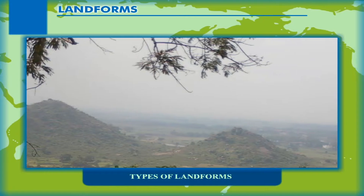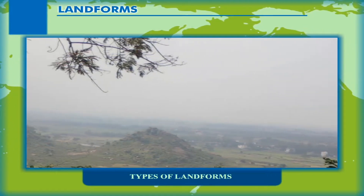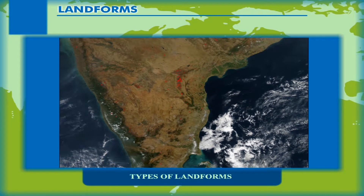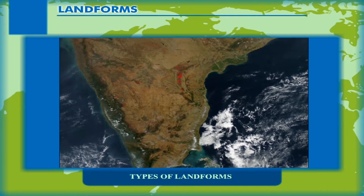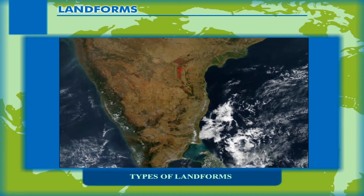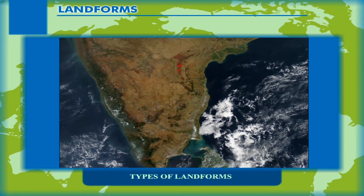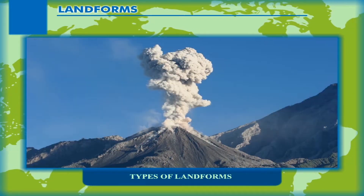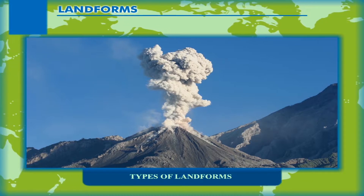Typical landforms include hills, mountains, plateaus, canyons, and valleys, as well as shoreline features such as bays, peninsulas, and seas, including submerged features such as mid-ocean ridges, volcanoes, and the great ocean basins.